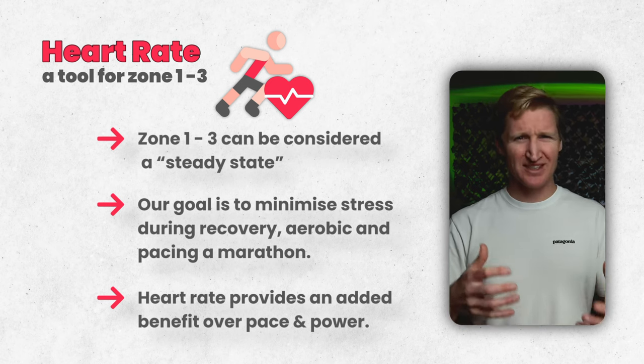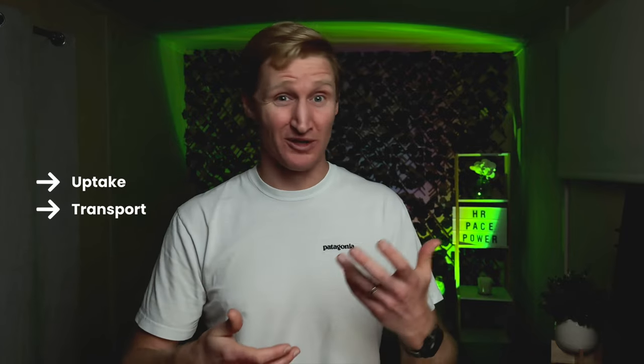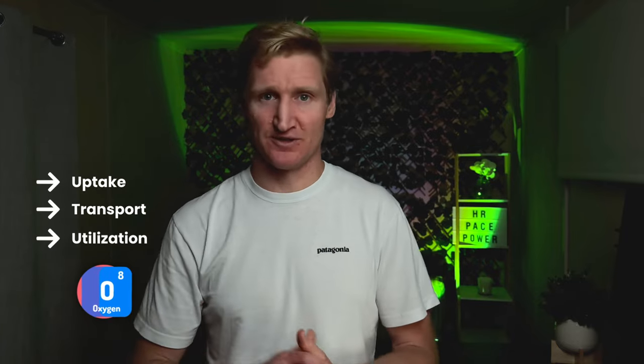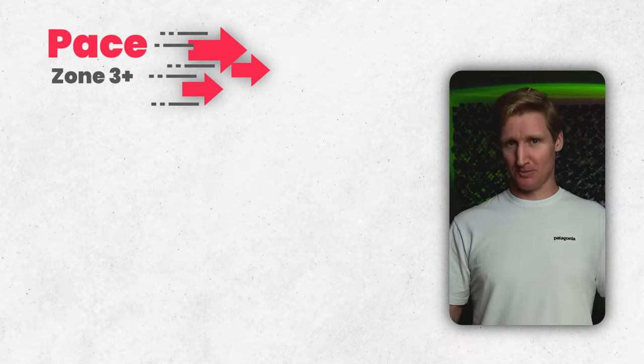As we start to go beyond zone three into zone four and above, heart rate doesn't do so well because it's a little slow — it relies on the uptake, transport, and utilization of oxygen. As we step into zone four, we start to have anaerobic metabolism, which leads us on to pace.